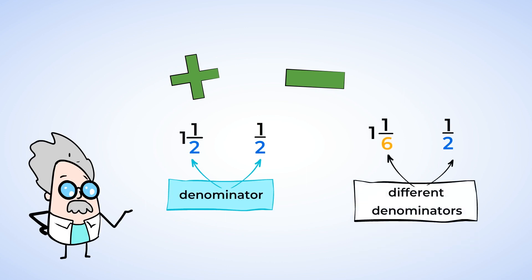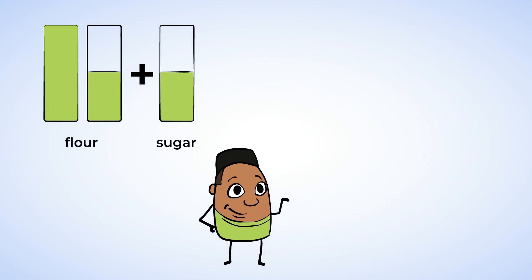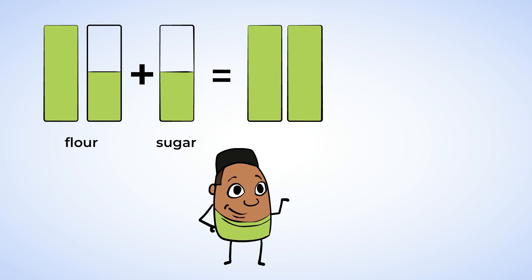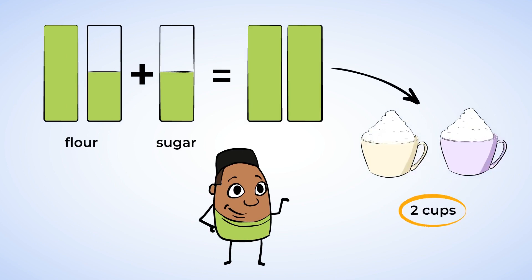Remember, when fractions have different denominators, the sizes of the pieces are different. In this example, both of our fractions have a two as the denominator. Looking at the two halves, if we combine them, we get a whole. And since we already have a whole cup with the flour, we would have a total of two cups. That means you'll need to find a bowl large enough to fit at least two cups.